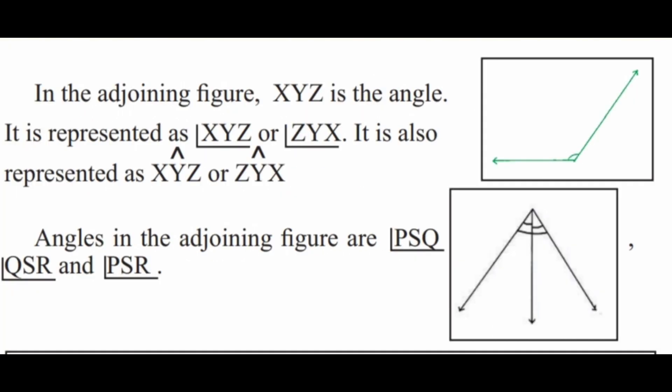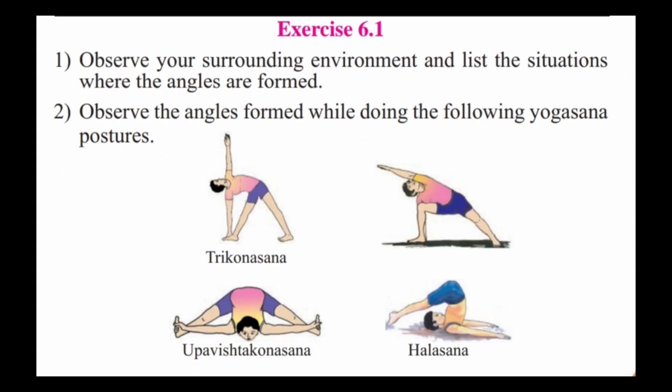Next, in the adjoining figure, XYZ is the angle. It is represented as angle XYZ or ZYX. It is also represented as Y when the angle is formed from there. Angles in the adjoining figure are PSQ, QSR and PSR.